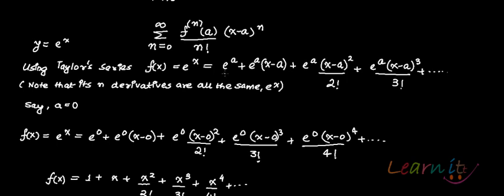Using the Taylor series for f(x) = e^x around a point a, we get: e^a + e^a·(x - a) + e^a·(x - a)^2 / 2! + e^a·(x - a)^3 / 3! and so on. Note that all derivatives of e^x are the same — the first, second, third, and all n-th derivatives of e^x all equal e^x.